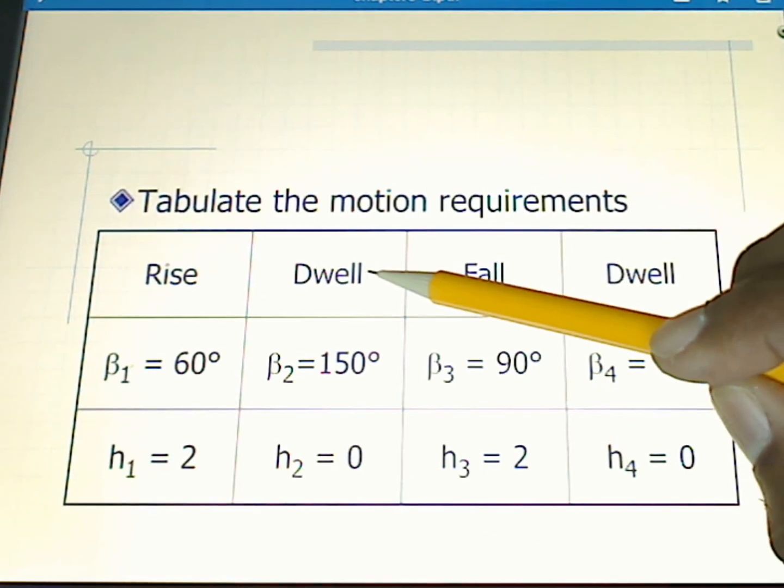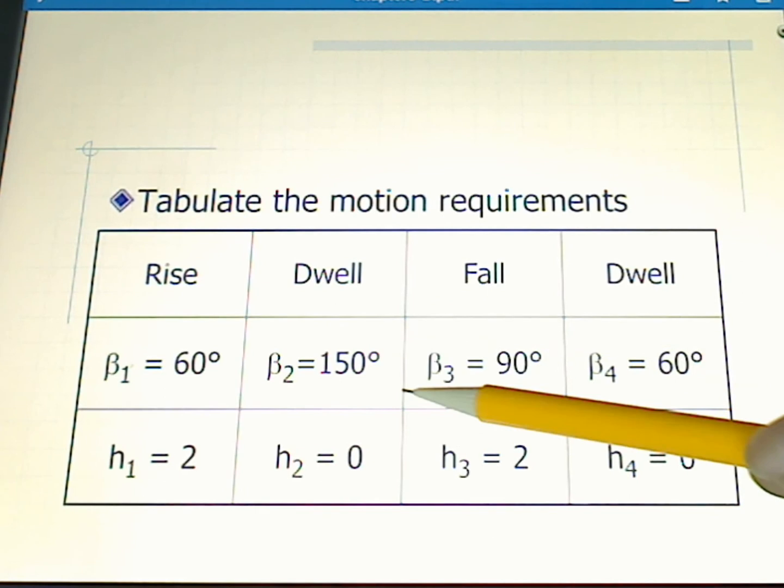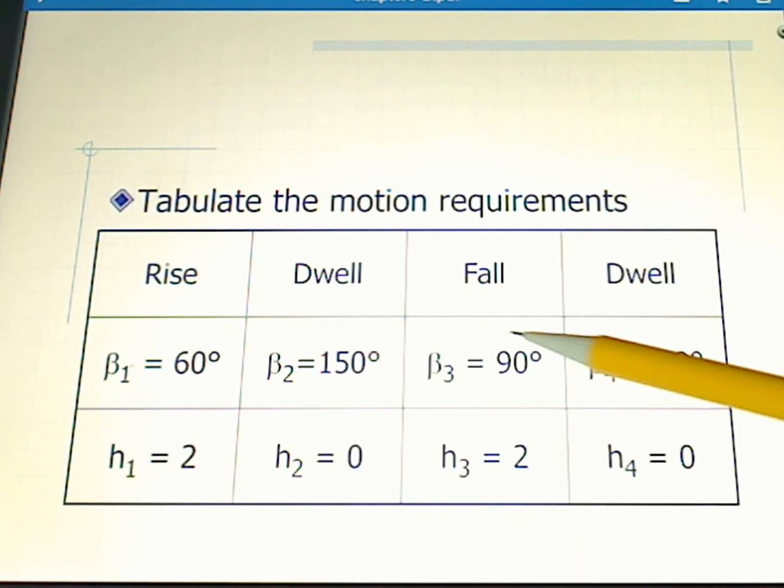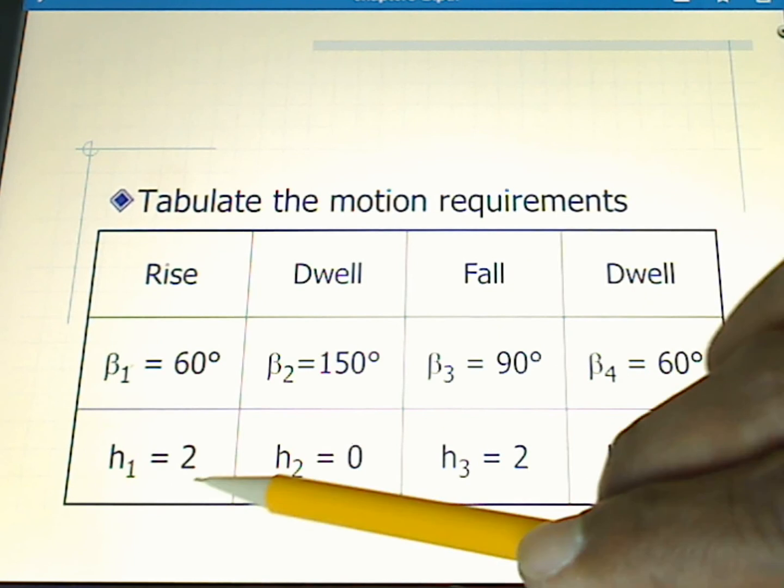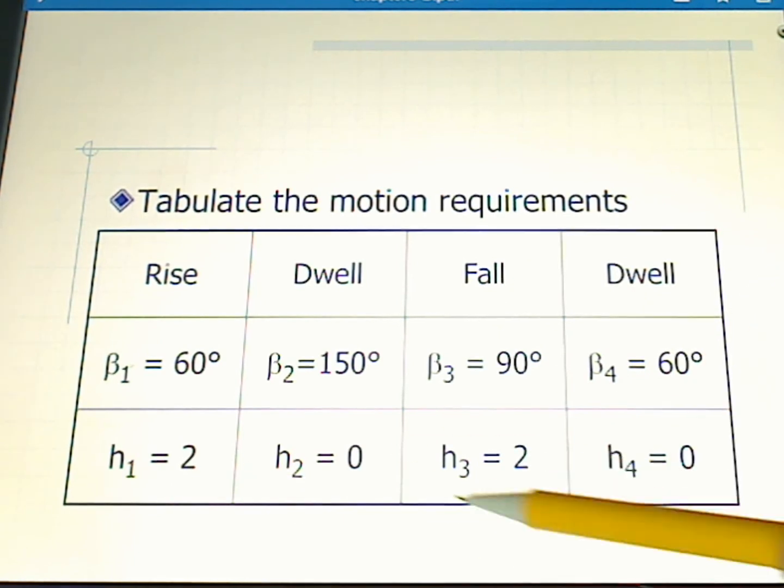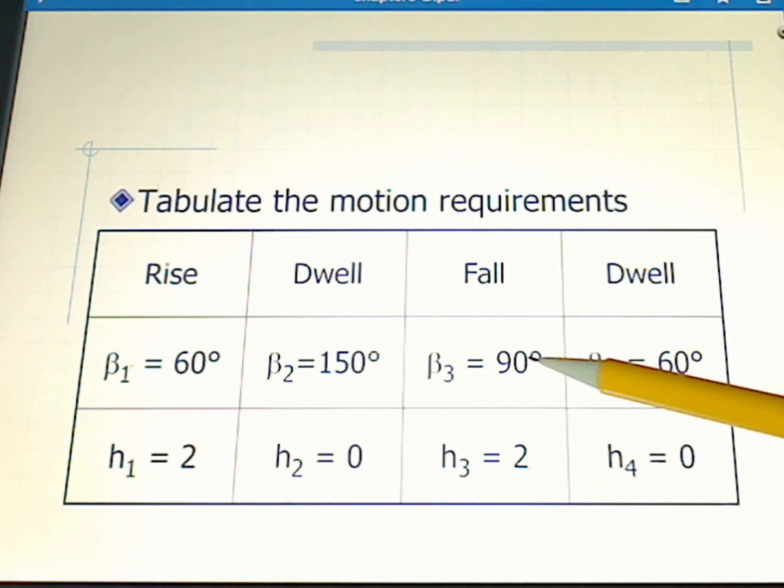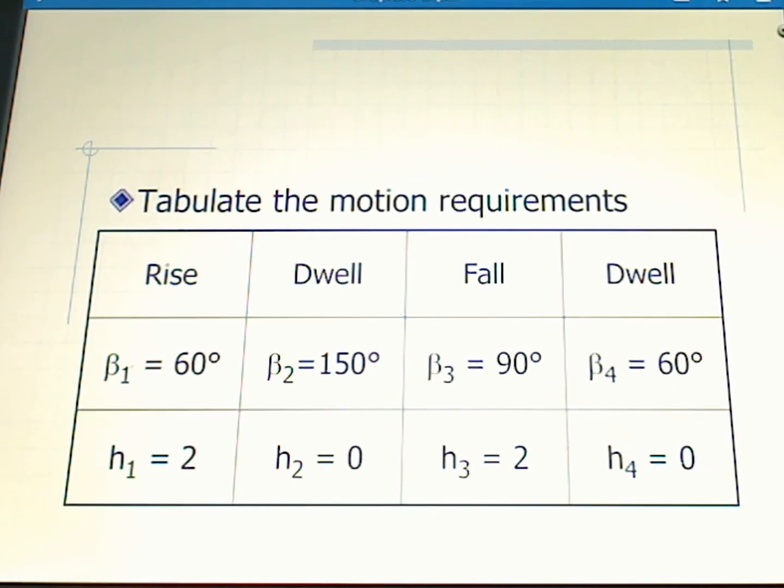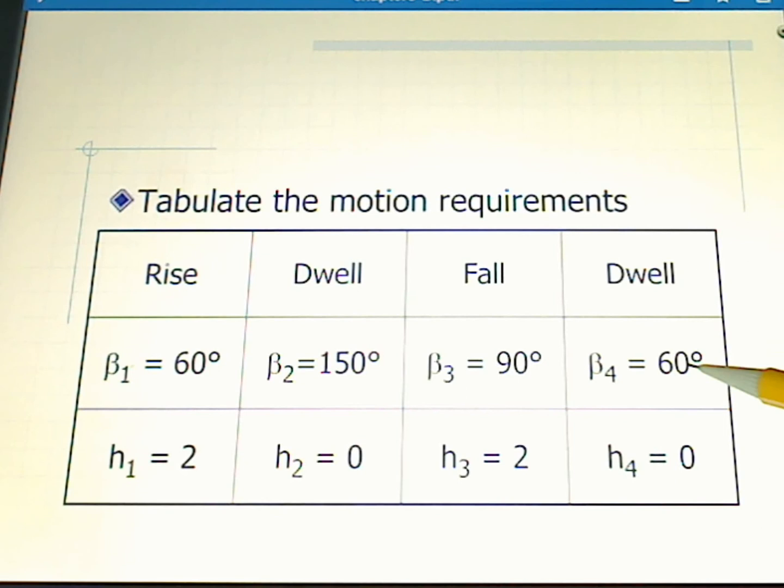By definition, a dwell means no motion. So while the cam rotates, the follower does not move. And then we fall, which means we go from two inches back down to zero. That's a change of two for our height, and our beta is 90 degrees. And then finally we dwell for 60 degrees, meaning that the total is 360. The total will always be 360 for any cam design. We're back down to zero ready to start again. This is just a table of what was previously mentioned as the requirements for this cam design.